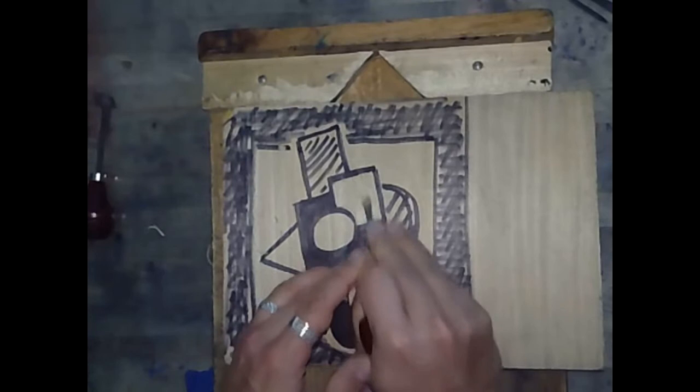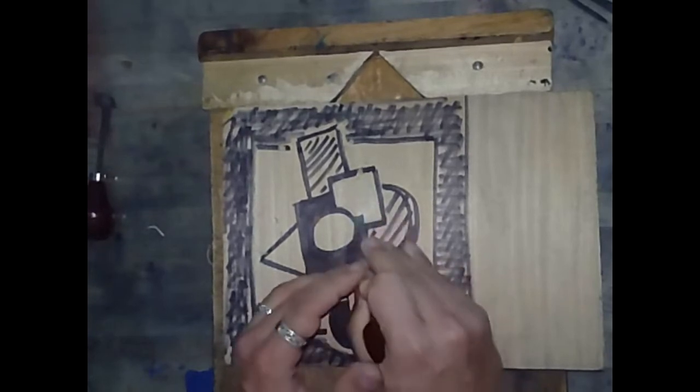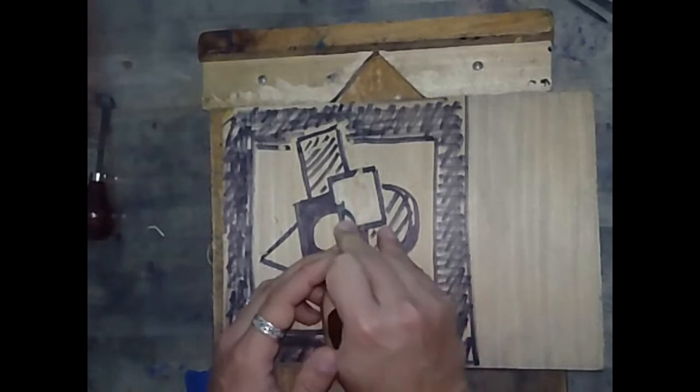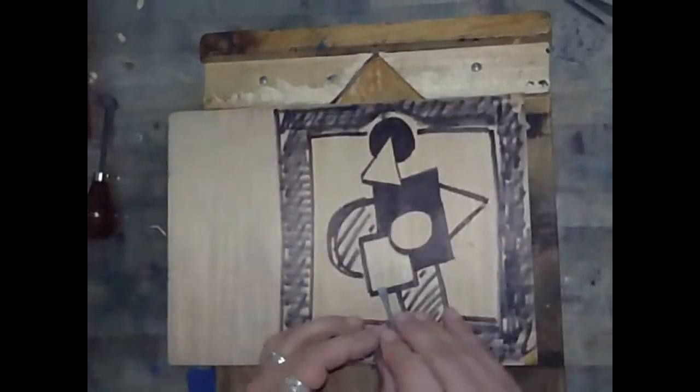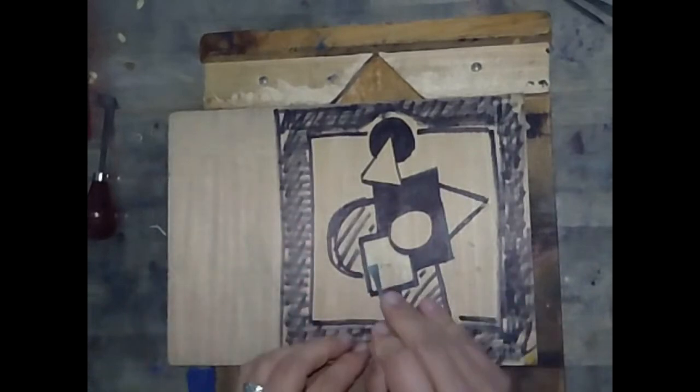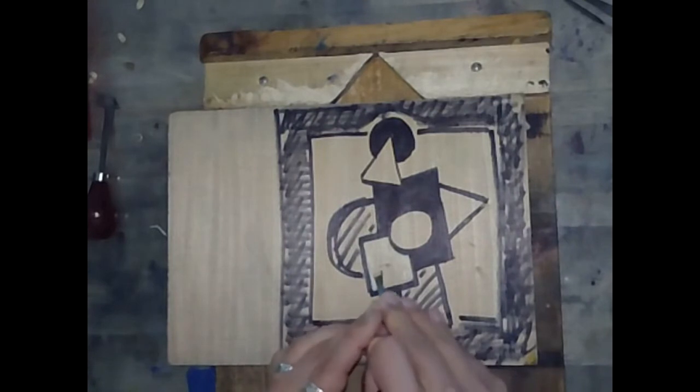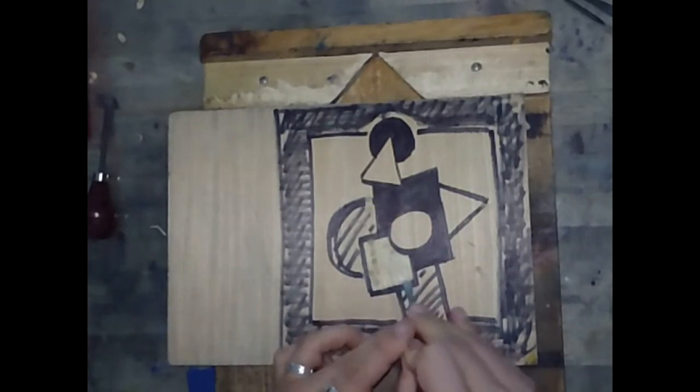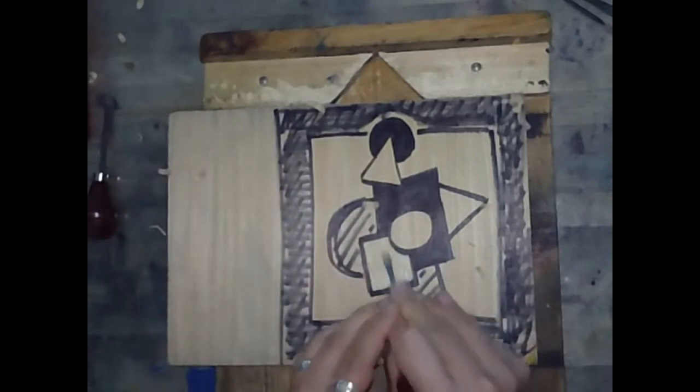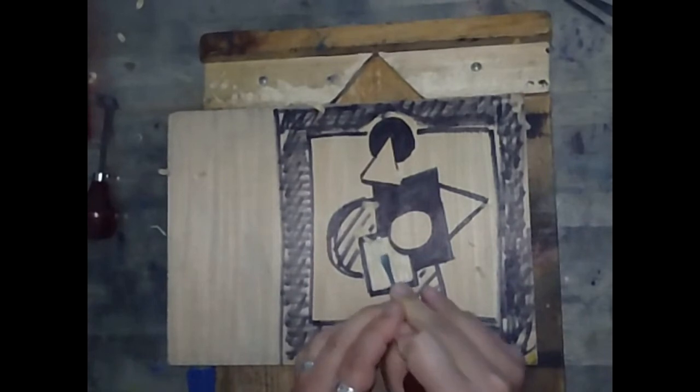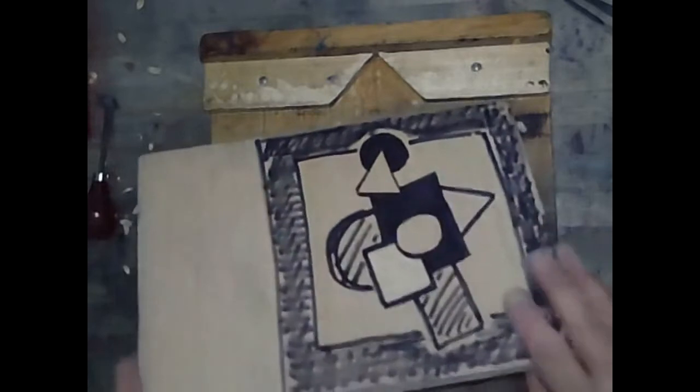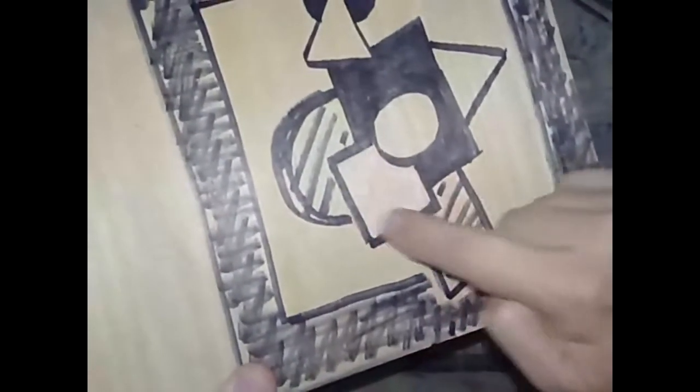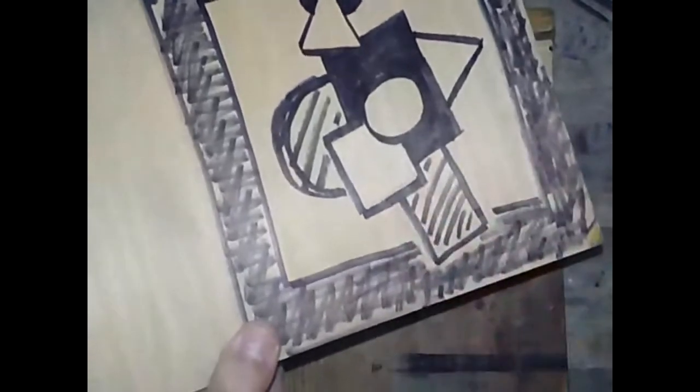Now you notice I'm not cutting all the way across. I'm cutting toward the middle. I'm going to cut about half of the shape in this direction and then I'm going to turn the tools around, turn the plate around, and start on the other side and come back to the middle. That, again, is preventing me from accidentally cutting through the shape into an area that I don't intend a cut to be.